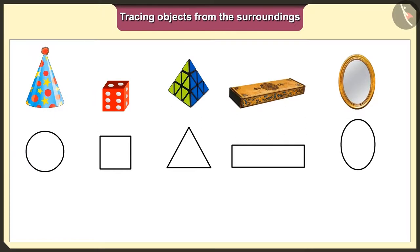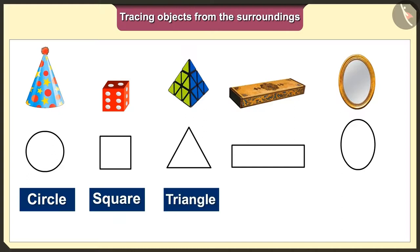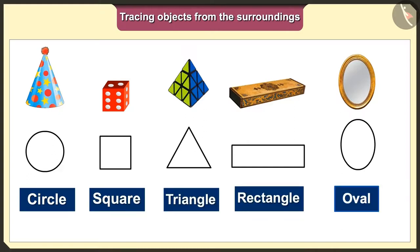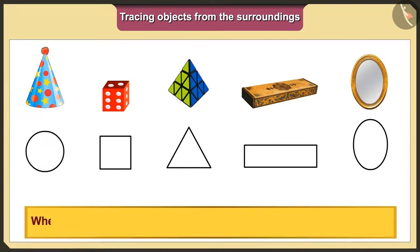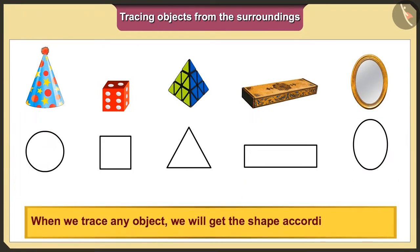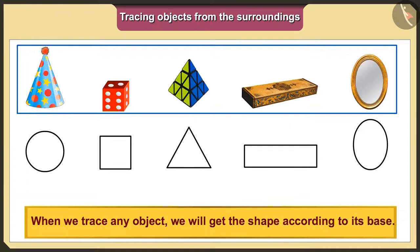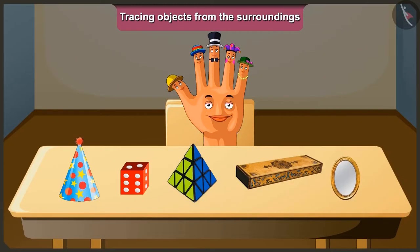So, today we traced the objects in our surroundings and got the shapes like circle, square, triangle, rectangle, and oval. Friends, remember that when we trace any object, we will get the shape according to its base. We will meet again in the next video. Bye.